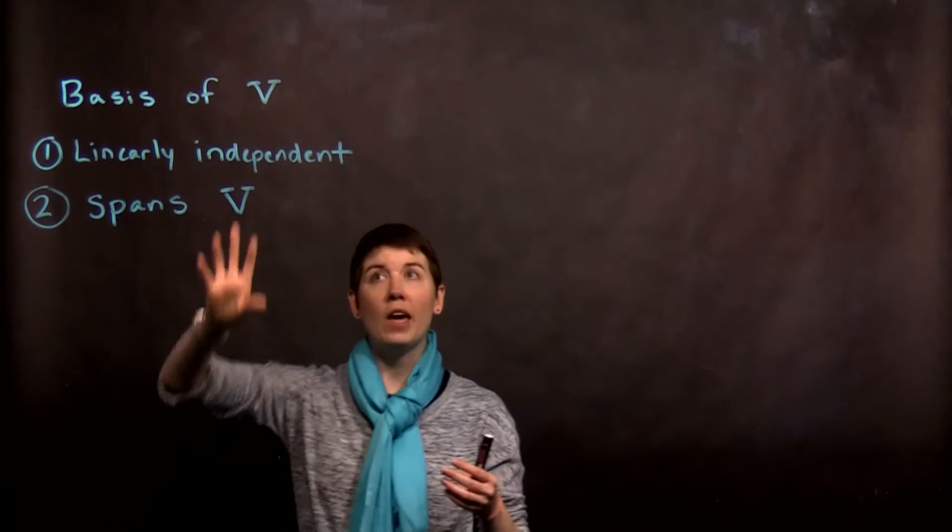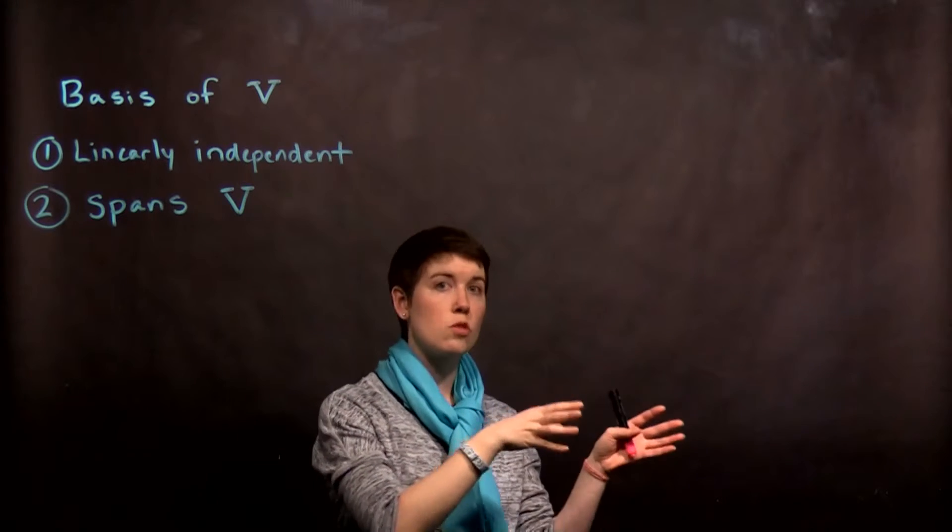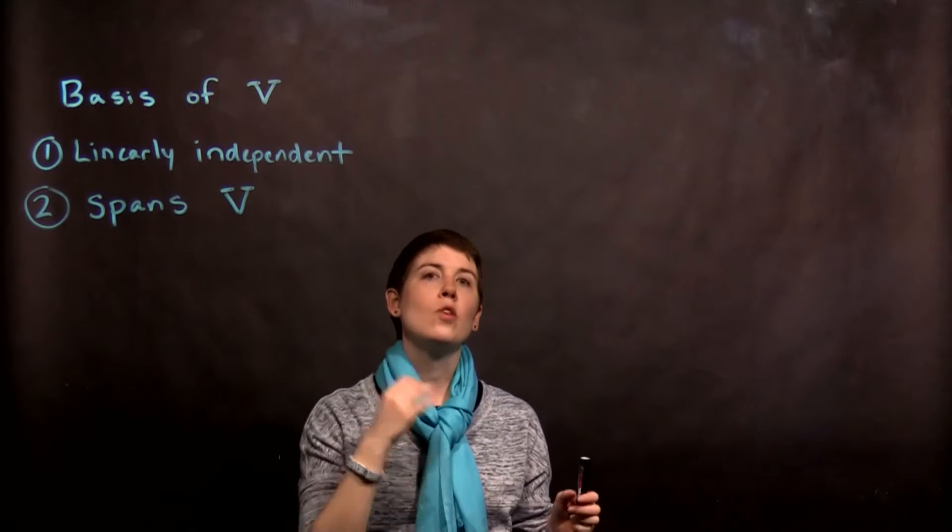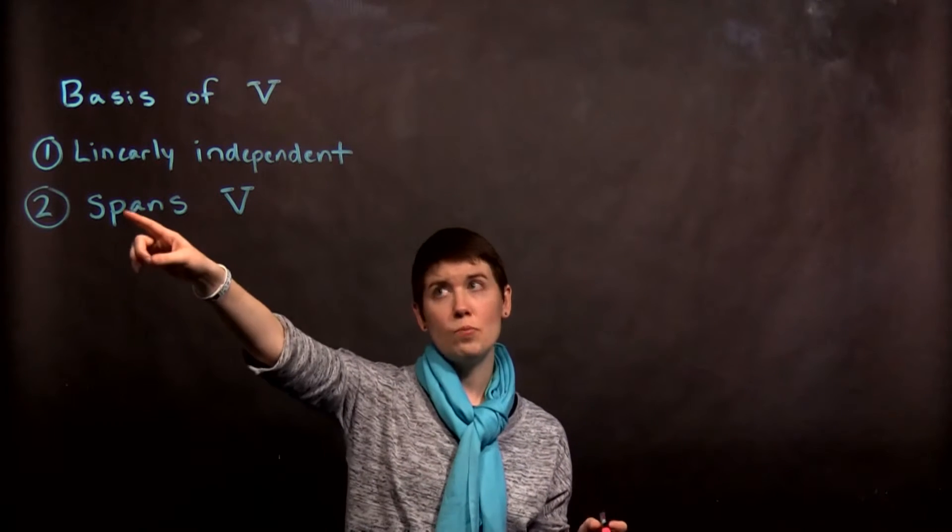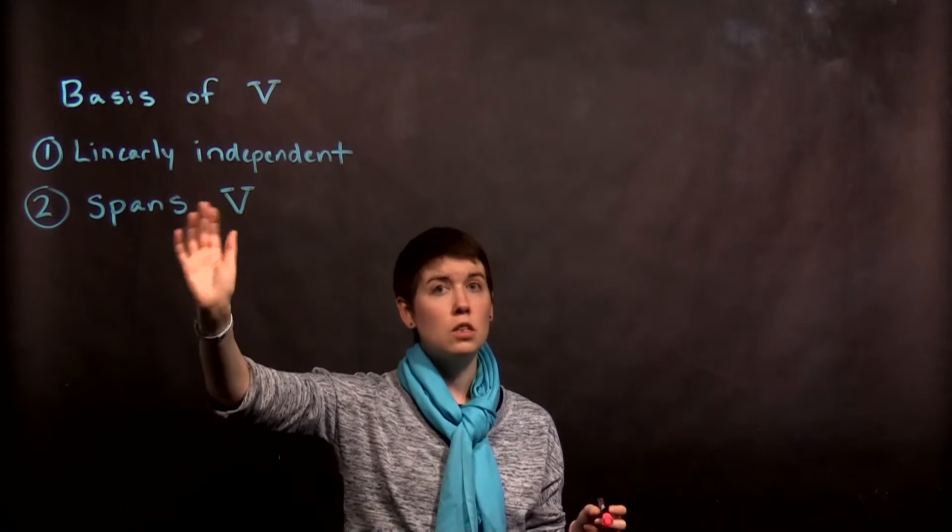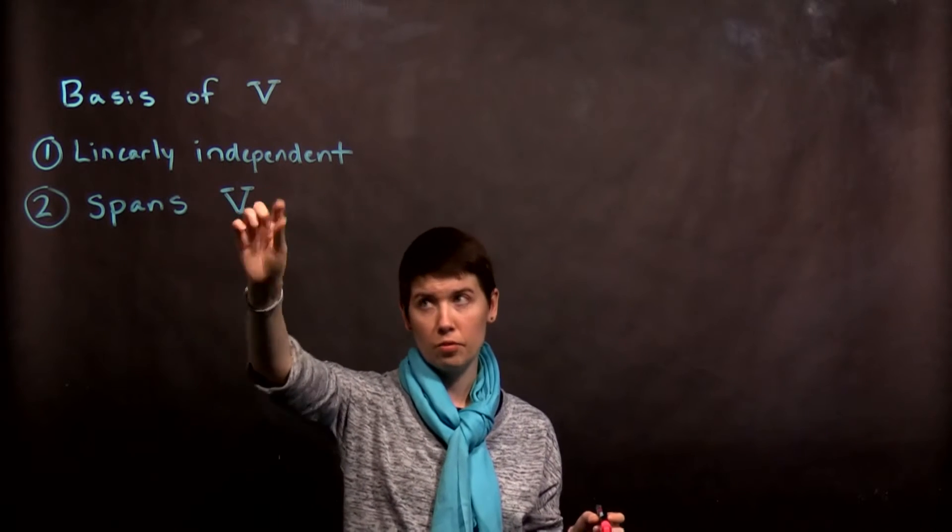Very simply, we have to think about a very specific vector space. So a basis is always going to be for a specific vector space and it's going to be a collection of vectors. This collection of vectors means that the vectors themselves need to be linearly independent and they need to span the vector space V.